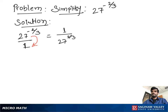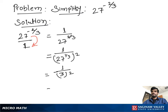Next, find the cube root of 27, then raise the result to the second power. The cube root of 27 is 3, because 3 times 3 times 3 is 27. So we write 1 over 3 squared. 3 squared is 9, so our final answer is 1 over 9.